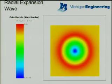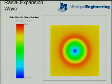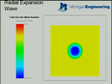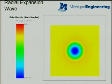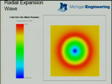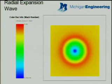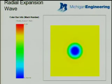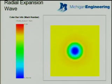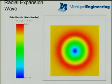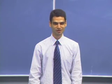What I'd like to show you next is an example of what these methods are actually capable of doing. Here is a radial expansion wave that is propagating radially inward and is interacting with itself. This is a plot of the Mach number, where the color blue refers to Mach number zero and the color red refers to Mach number 2.6. This extremely cool plot concludes our discussion today, and I thank you very much for your attention.